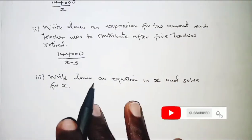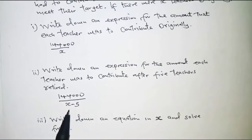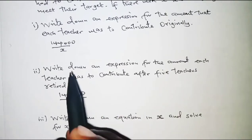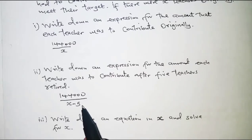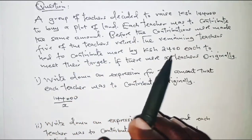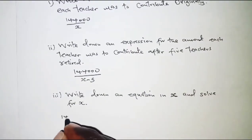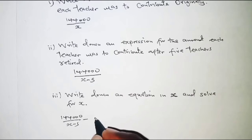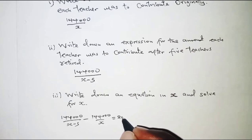For the last part, we write down an equation in x. After the 5 had left, each teacher contributes 144,000 over (x minus 5), and originally they were to contribute 144,000 over x. What they contribute after 5 have left must be more than what they ought to have contributed by 2,400. So the equation is: 144,000/(x−5) − 144,000/x = 2,400.